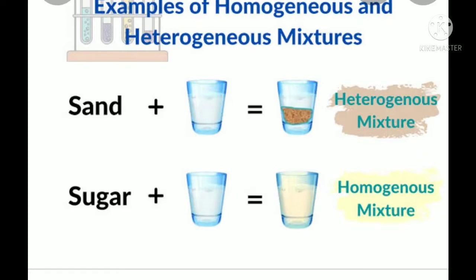The next best example is air. Air is a mixture of different gases — that is nitrogen, oxygen, carbon dioxide, and others. But they are uniformly distributed everywhere as a homogeneous mixture. Other examples we use in our day-to-day life activities include drinks — most are in the form of solution. Fruit juice, aerated drinks, tea, coffee, etc. are all in the form of solution.